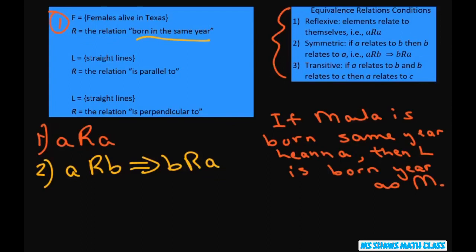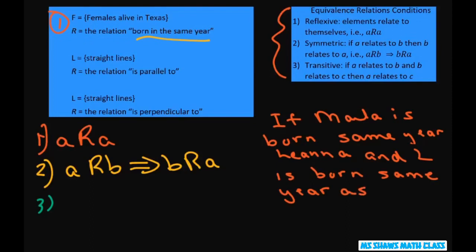And then transitive, you do the same thing. So basically it's saying if A relates to B and B relates to C, then A relates to C. So I can add to this: if Molly is born the same year as Leanna and Leanna is born same year as Emily, then Molly was born the same year as Emily.